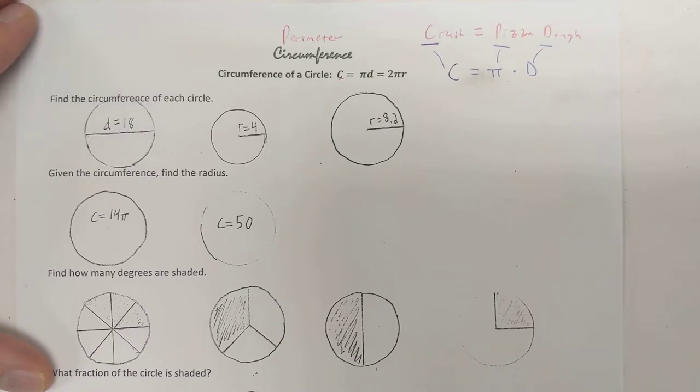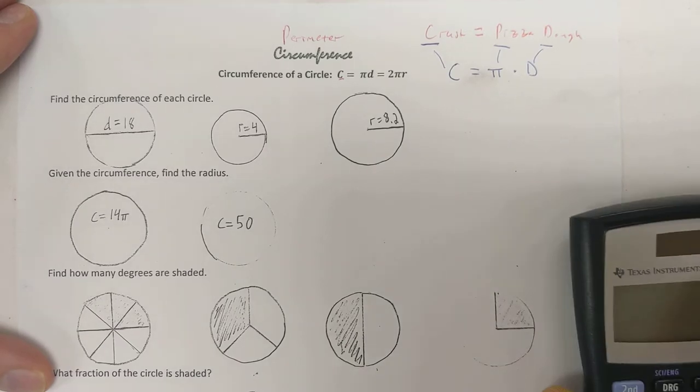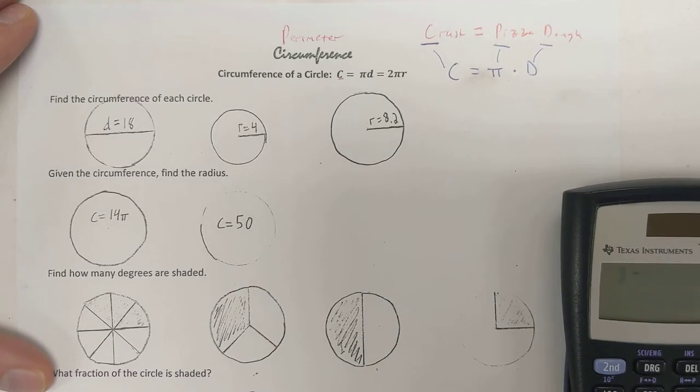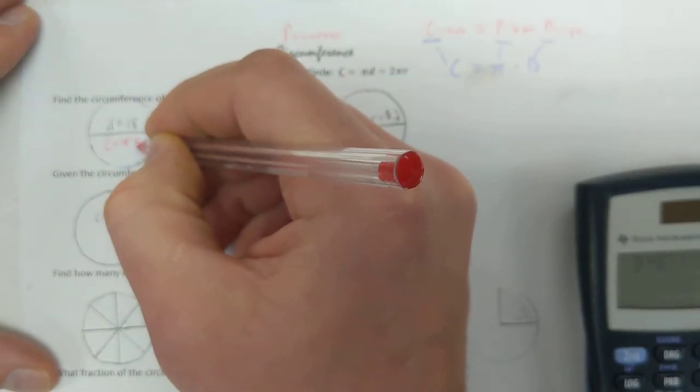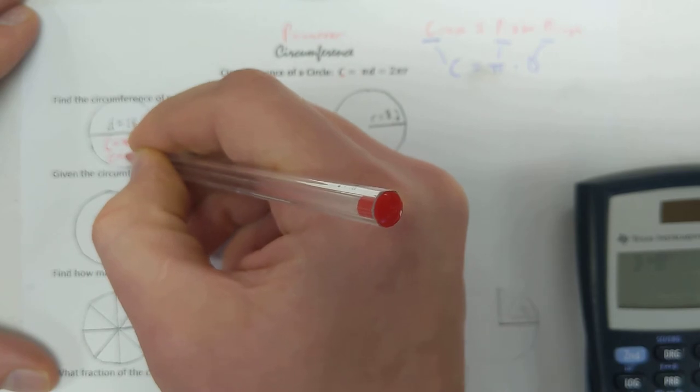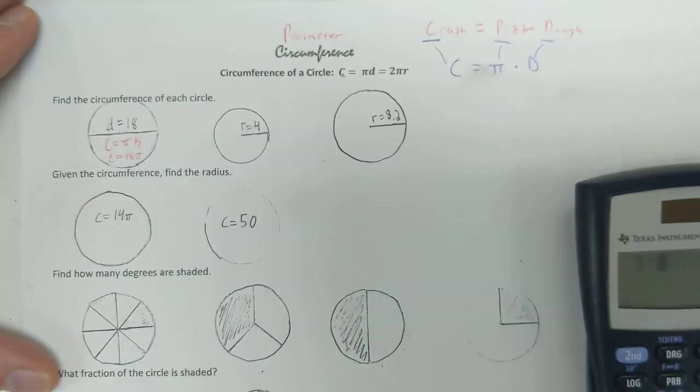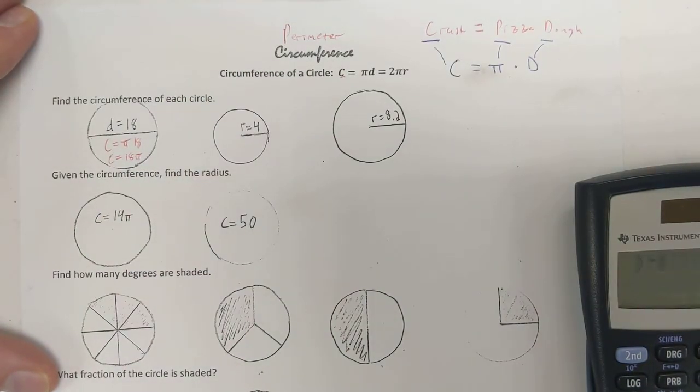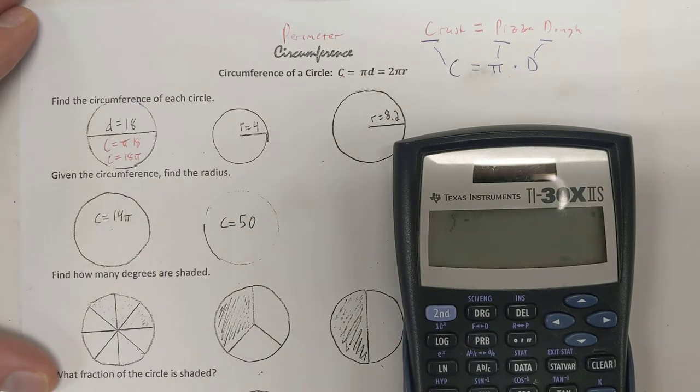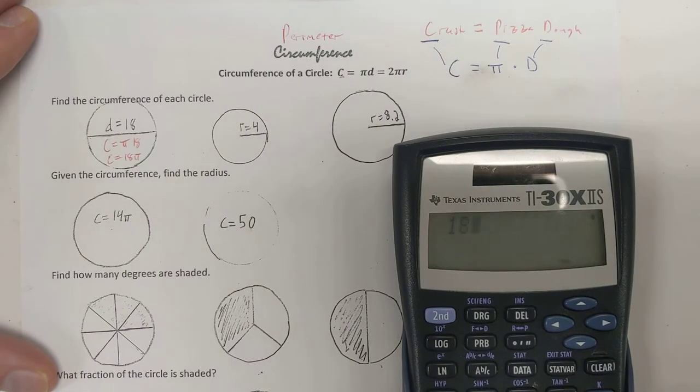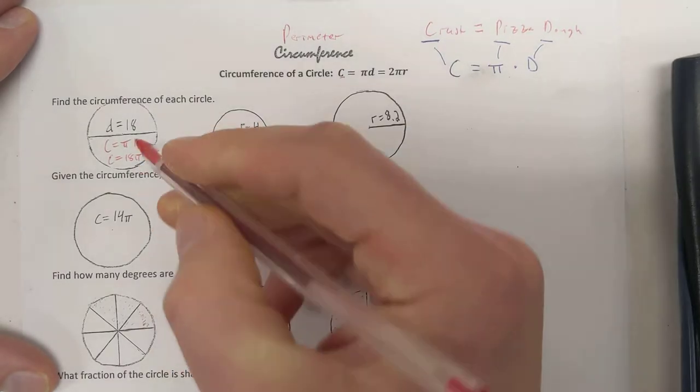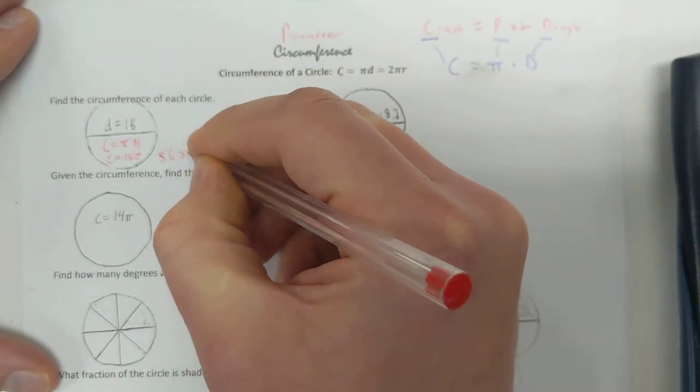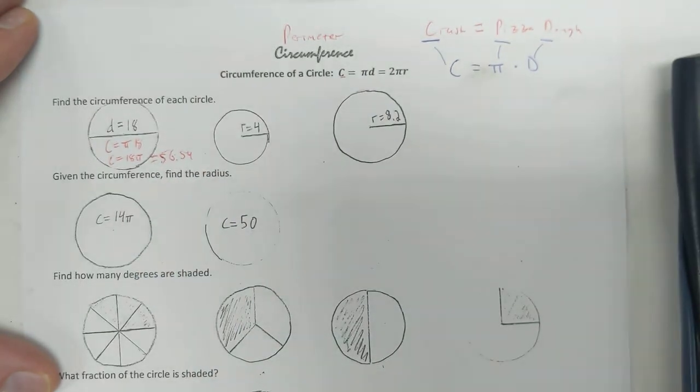Alright, so these first ones, very simple, very straightforward. Find the circumference of each circle. Circumference is just pi times diameter. So, we could just write this as 18 pi. That's perfectly fine. However, we can also use our calculator and 18 times pi is 56.54. Same thing. Cool.